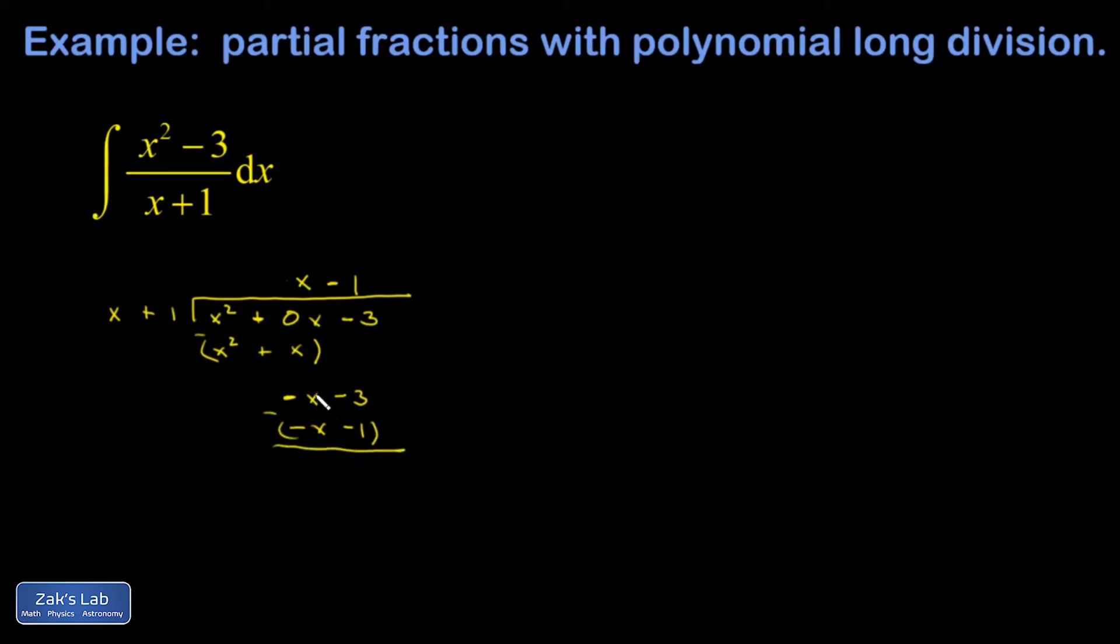And again, by design, the leading term dies out. And I have a negative 3 minus negative 1, which is negative 2. So, I could say remainder negative 2. But it's important to know how to interpret that remainder.